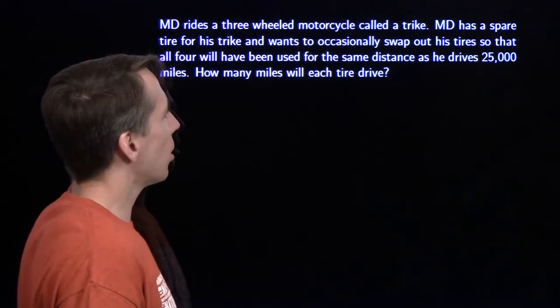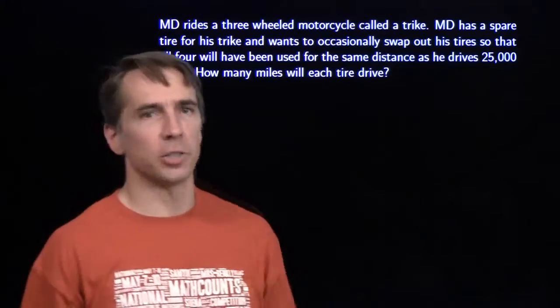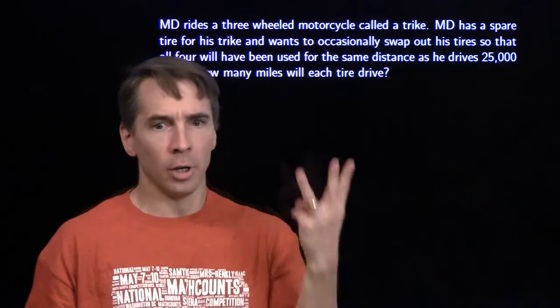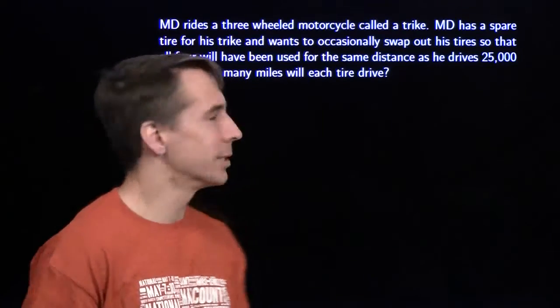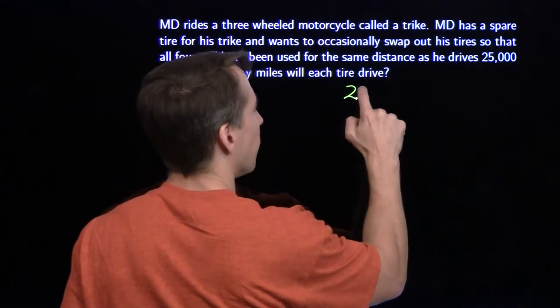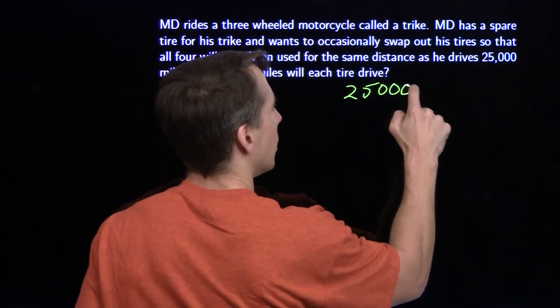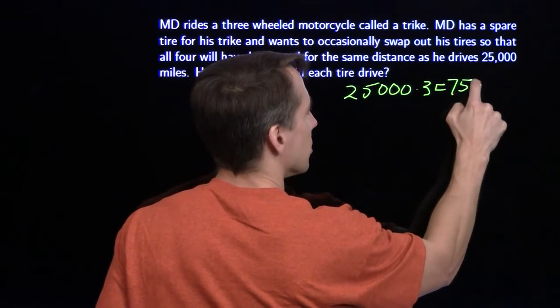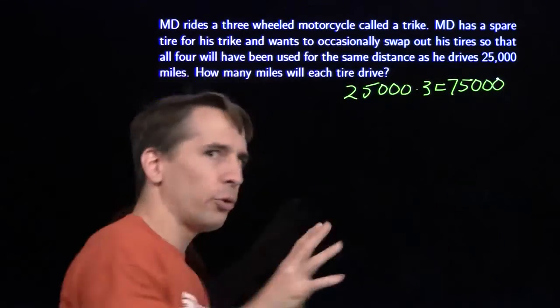We can start by figuring out how many miles all the tires go. We have 25,000 total miles and there are three tires on the trike at any one time. So that gives us 25,000 times three. That's 75,000 total tire miles.